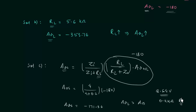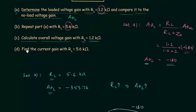Part D of this problem is homework for you. In part D you need to calculate the current gain with RL equal to 5.6kΩ. You already know the formula for current gain — use it, calculate the current gain, and once you have your answer post it in the comment section. I will end this lecture here. See you in the next one.